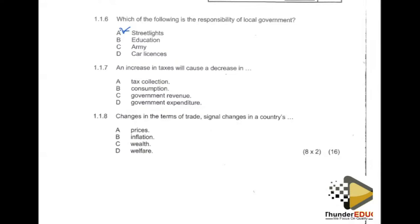The question states an increase in taxes will cause a decrease in what. Checking the options: consumption is correct — yes. Government revenues is out and government expenditures is out. An increase in taxes causes a decrease in consumption because when the government increases the percentage of tax on individual income, it discourages production of goods and services.